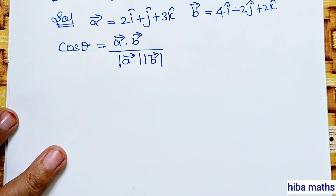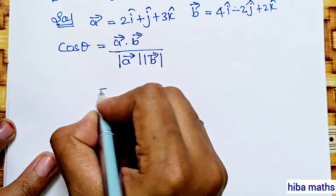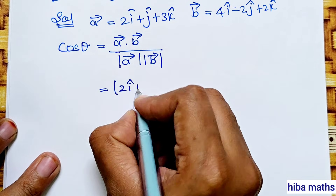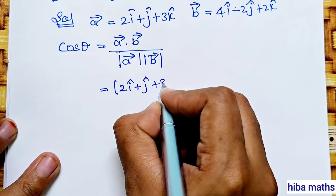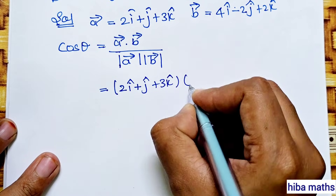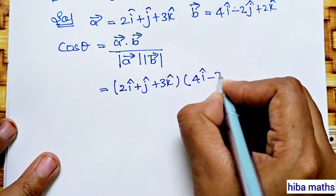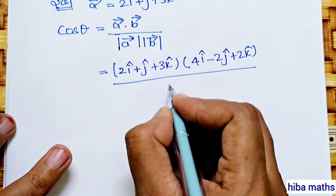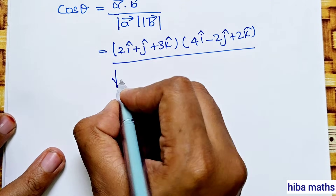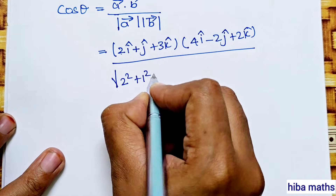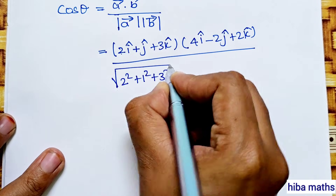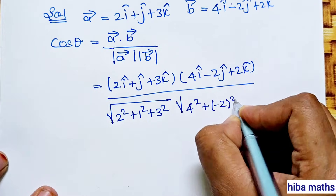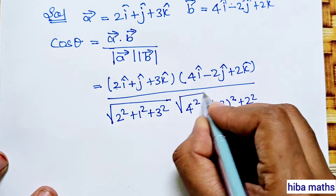Now we can solve it. We can apply a vector dot b vector. Substitute: 2i plus j plus 3k into 4i minus 2j plus 2k, divided by modulus of a vector. That is root of 2 squared plus 1 squared plus 3 squared, into root of 4 squared plus minus 2 squared plus 2 squared.